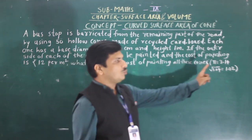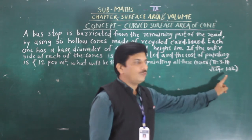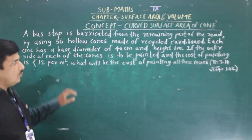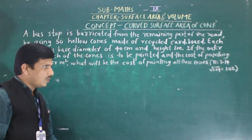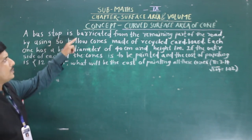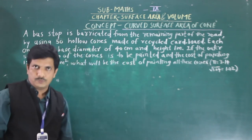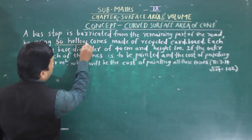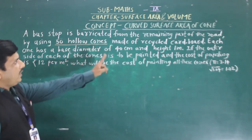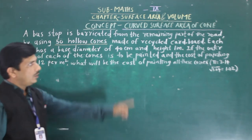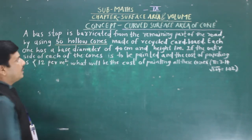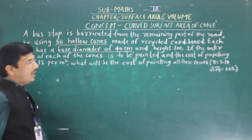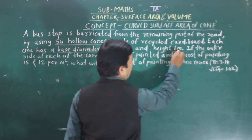Two values are given: pi equals 3.14 and root 1.04 is equal to 1.02. So first we will see which things are given here. The bus stop is barricaded using 50 hollow cones made of recycled cardboard. Each one has a base diameter of 40 cm and height 1 m.